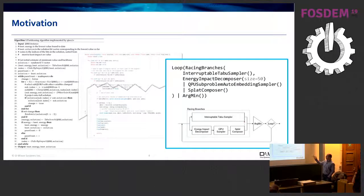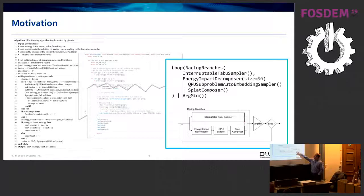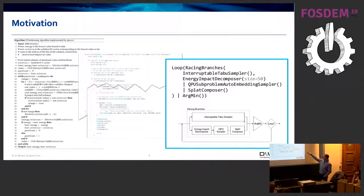The functional structure of the solver looks like this: you have a loop which in two branches tries to run taboo. In parallel, it decomposes the problem based on energy impact, sends that off to a QPU, and combines the sub-solution back to a global sample, then picks the better one. The red arrow here means racing branches — once one branch is done, it interrupts the other, gets the best solution from that branch, and incorporates it into the final solution. We pick the better solution by this argmin block and loop until some condition is met.